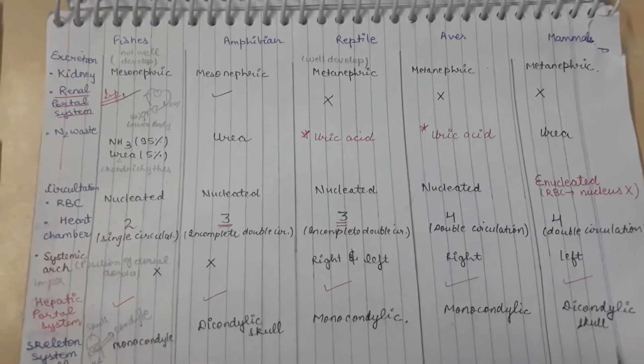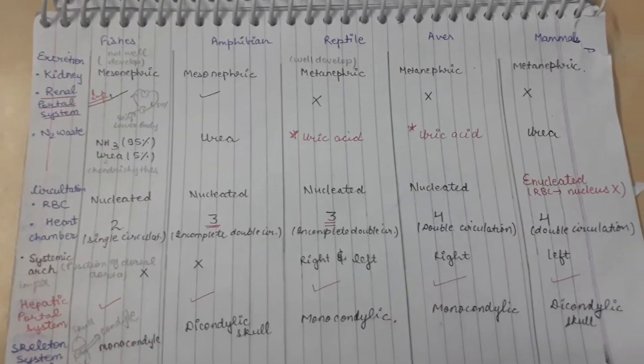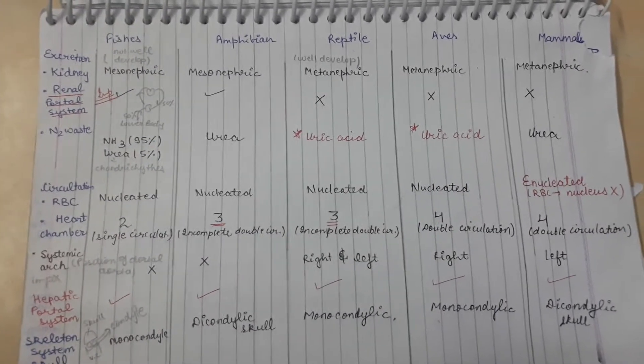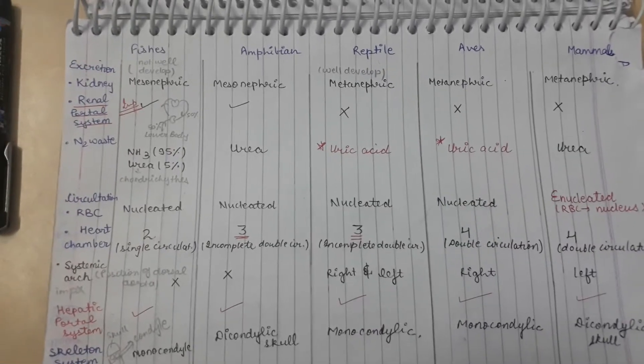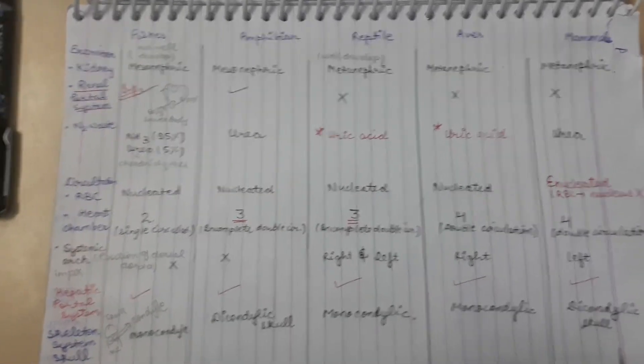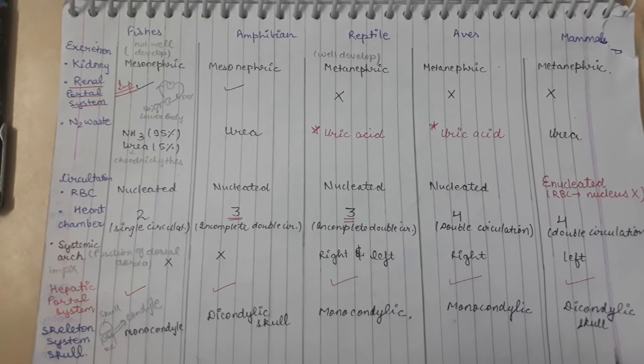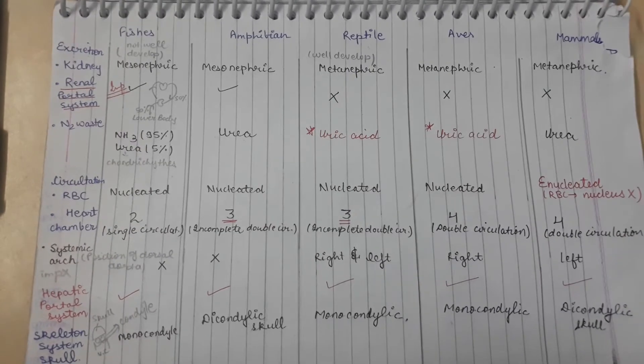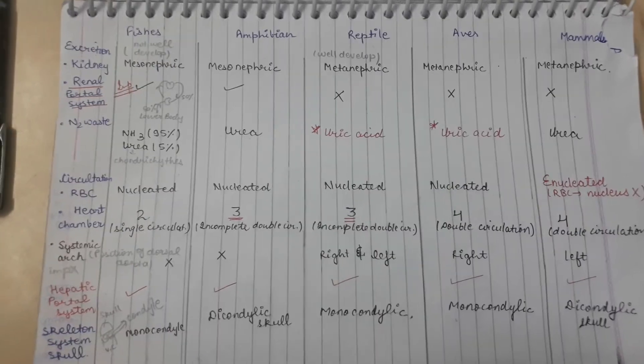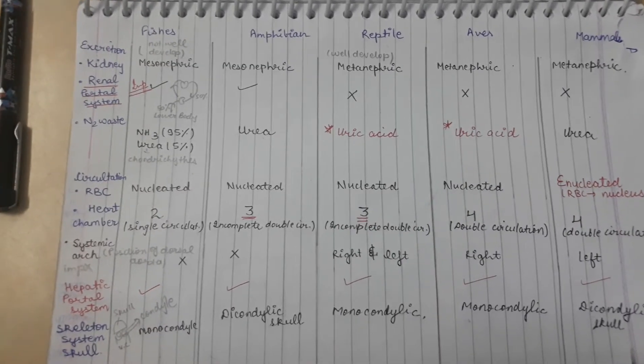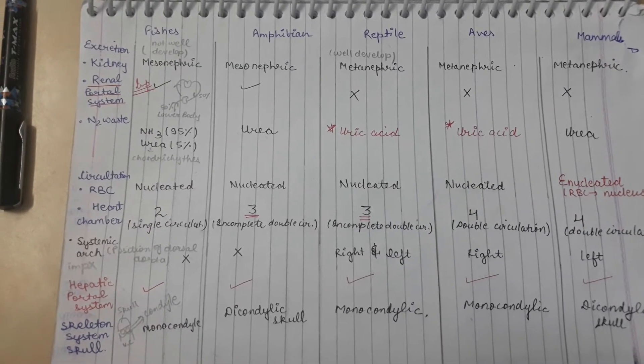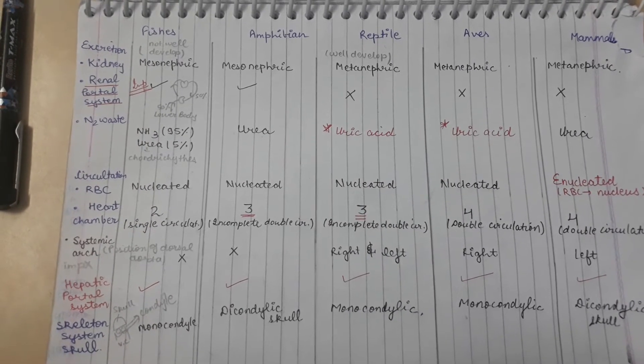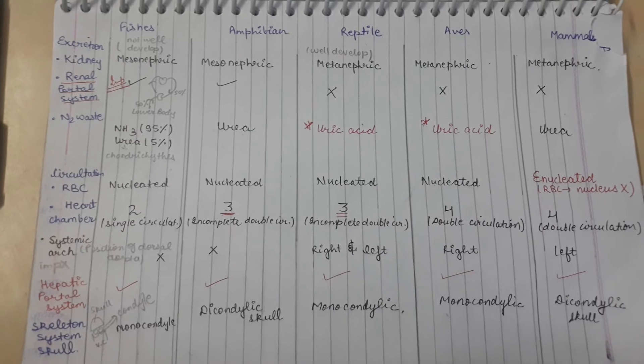Nitrogenous waste: we know our excretory waste is majorly urea. Aves and reptiles have uric acid, amphibians have urea, and fishes have ammonia and urea. Fishes are divided into chondrichthyes and osteichthyes. Urea is secreted by chondrichthyes, but they're not in large numbers, so we'll consider the majority as ammonia.